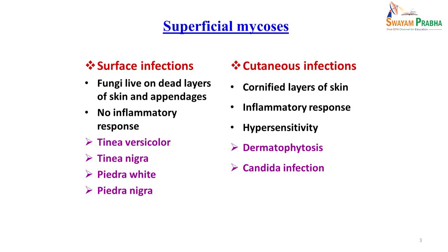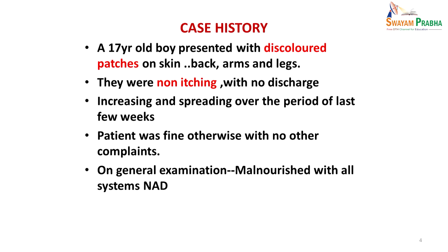Before going into details, let me describe a few cases to help you understand how we come across these patients and diagnose them. A 17-year-old boy presented with discolored patches on the skin of his back, arms and legs. These patches were not causing any problem as such — they were just a cosmetic problem — but he noticed they were progressing over the last few weeks. They were non-itching with no discharge. The patient was malnourished but otherwise had no other systemic complaints.